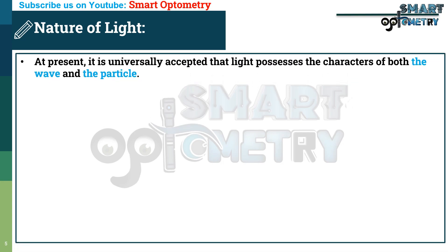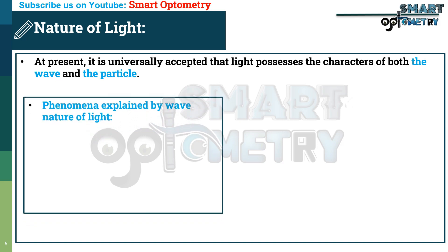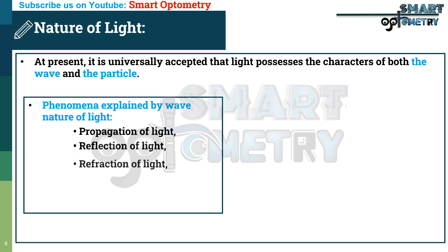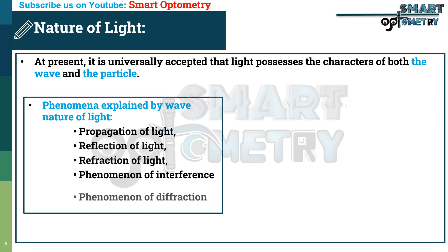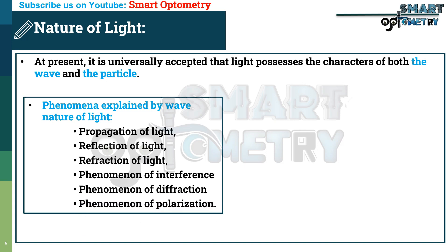Nature of Light. At present, it is universally accepted that light possesses the characteristics of both the wave and the particle. Phenomena explained by the wave nature of light include: propagation of light, reflection of light, refraction of light, phenomenon of interference, phenomenon of diffraction, and phenomenon of polarization.